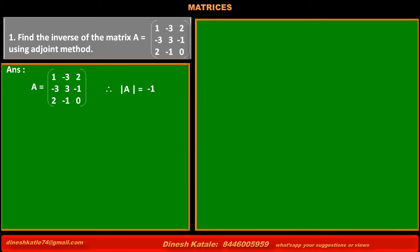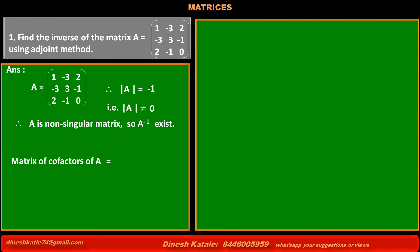Therefore, determinant of A is equal to -1, that is determinant of A is not equal to 0. Therefore A is a non-singular matrix, so A inverse exists. Now we have to find the matrix of cofactors of A.